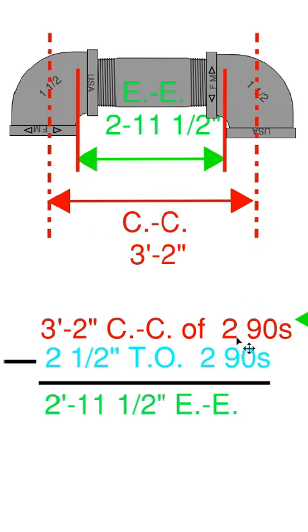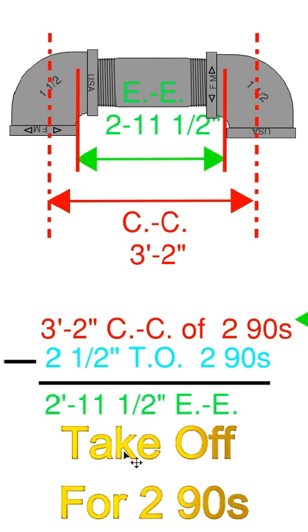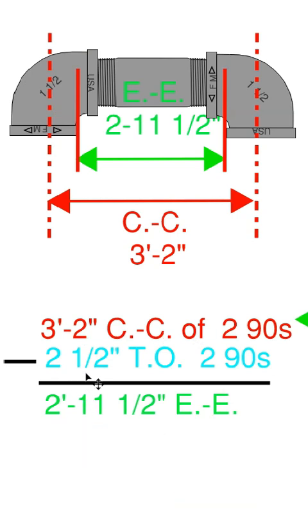So down on our sheet of paper, three foot two center to center of two nineties. So two nineties at an inch and a quarter is a cumulative of two and a half inches. Two and a half inches to take off for two nineties.